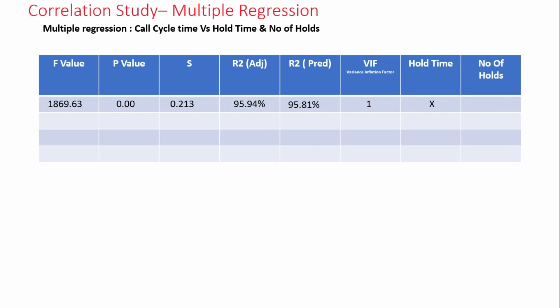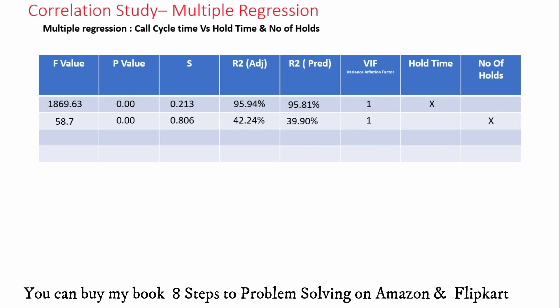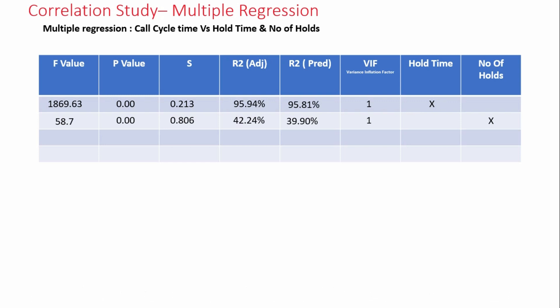The same values can be calculated for number of holds. The F-value is 58.7, p-value is 0.00, S-value is 0.806, R-square adjusted value is 42.24%, R-square predicted value is 39.90%, and VIF factor is 1. An R-square adjusted value of 42.24%, which is less than 65%, indicates that there is not a strong relationship between number of holds and call cycle time.